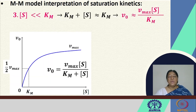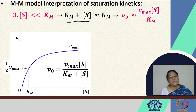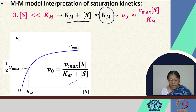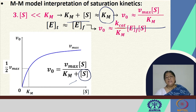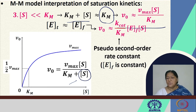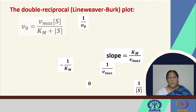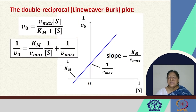When the substrate concentration is much less than Km, the term Km plus S is approximately equal to Km, so we can neglect S in the denominator. This gives a simplified expression where V0 is proportional to (Kcat/Km) times the substrate concentration. Since the free enzyme concentration is essentially equal to the total enzyme concentration under these conditions, Kcat/Km is a pseudo second-order rate constant.